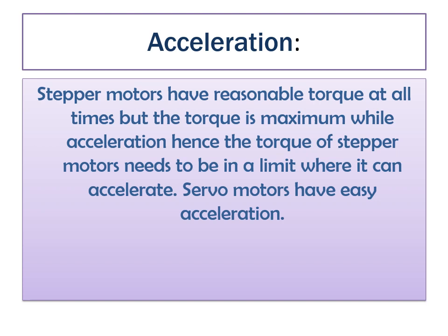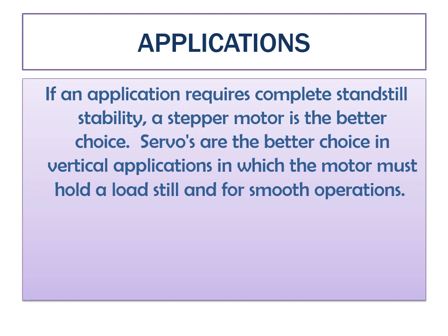Stepper motors have reasonable torque at all times, but the torque is maximum while accelerating the output shaft. Hence the torque of stepper motors needs to be within a limit where it can accelerate when needed. Servo motors have easy acceleration as they have varying torque depending on the acceleration and position of the output shaft. Considering these factors, the ideal motor is selected for a given project.